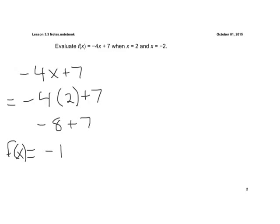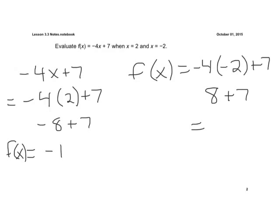Our second problem here, now we're plugging in a negative 2. So we have f of x equals negative 4. Now instead of x, we're going to plug in that negative 2 and add 7. A negative times a negative is a positive. So we have a positive 8 plus 7 equals 15. So f of x equals 15. We're just substituting in there.